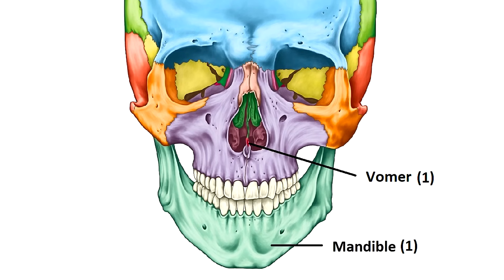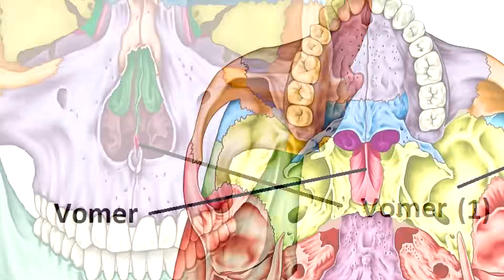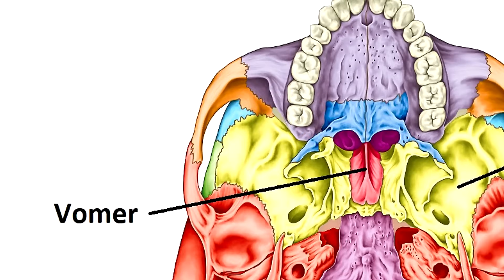For the other single bone in the face we have the vomer. This thin flat bone forms the inferior part of the nasal septum, running down the median plane of the nose. You can see a small part of it from the anterior view because it extends deep into the skull, and it gets its name from an ancient word meaning 'plowshare.' It's much easier to see from the inferior view of the skull.